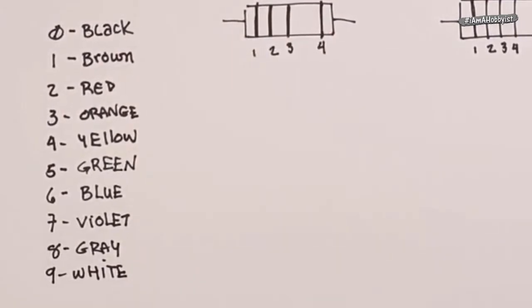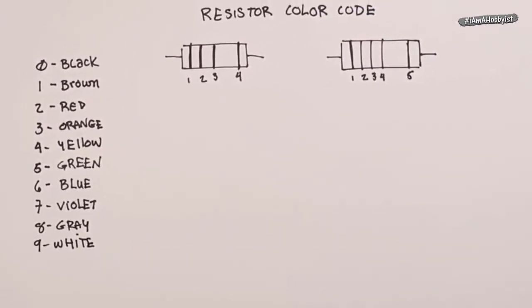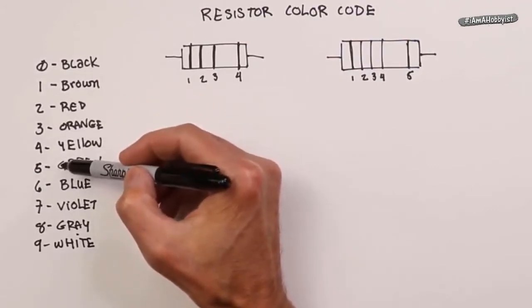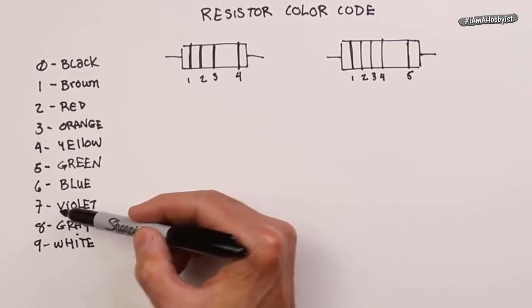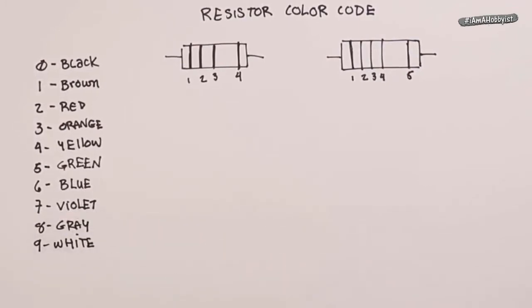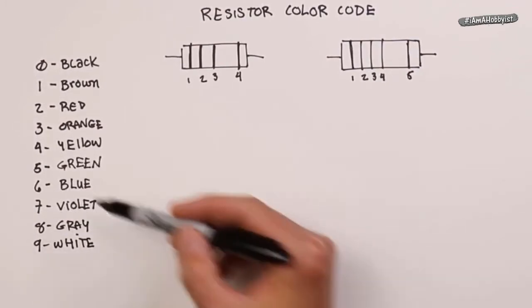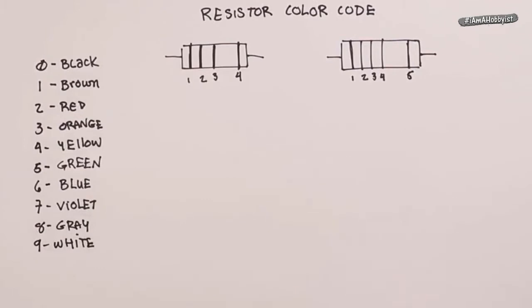If you took a physics course, you might have heard of ROYGBIV, the way to remember this: red, orange, yellow, GB. They would throw in an indigo here, violet. It's just too hard to tell the difference between indigo and violet when you're looking at a color code, so we just kind of skip over that.